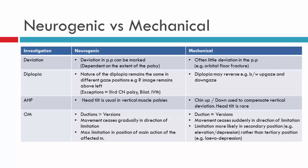Now we'll move on to neurogenic versus mechanical palsies. Here we have tables listing common features and differences between the two, which we'll revisit when discussing mechanical deviations. In terms of the deviation, it can be marked in neurogenic palsy depending on the extent of the palsy — a minus four, for instance, would produce a large deviation. However, this doesn't necessarily happen in mechanical restrictions. You might have marked limitation in elevation or depression, but in primary position, you may see little deviation. This is usually an indicator of a mechanical restriction rather than neurogenic.